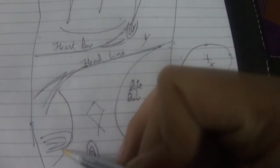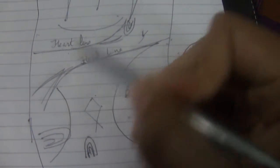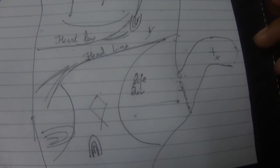Now this line is known as the girdle of Venus and this is the bow of intuition. These both add to the sensitivity of the person and in general will make the person more and more sensitive.